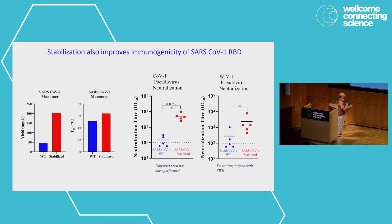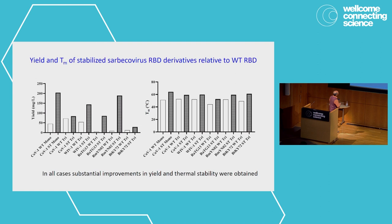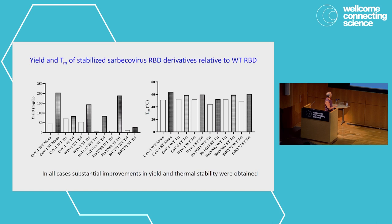This shows homologous and heterologous neutralization — in both cases we see enhanced neutralization. We did this for a number of other sarbecovirus receptor binding domains, both monomeric and trimeric, from different clades. In white are the wild-type sequences and in the filled bars are the stabilized sequences. There are typically very substantial increases in protein yield as well as increases in the thermal melting temperature.